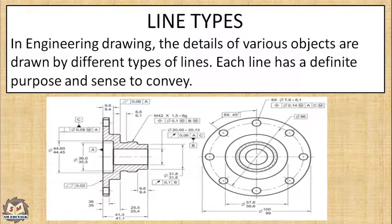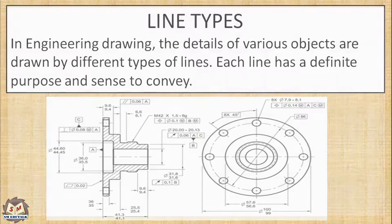In engineering drawing, the details of various objects are drawn by different types of lines. Each line has a definite purpose and sense to convey.